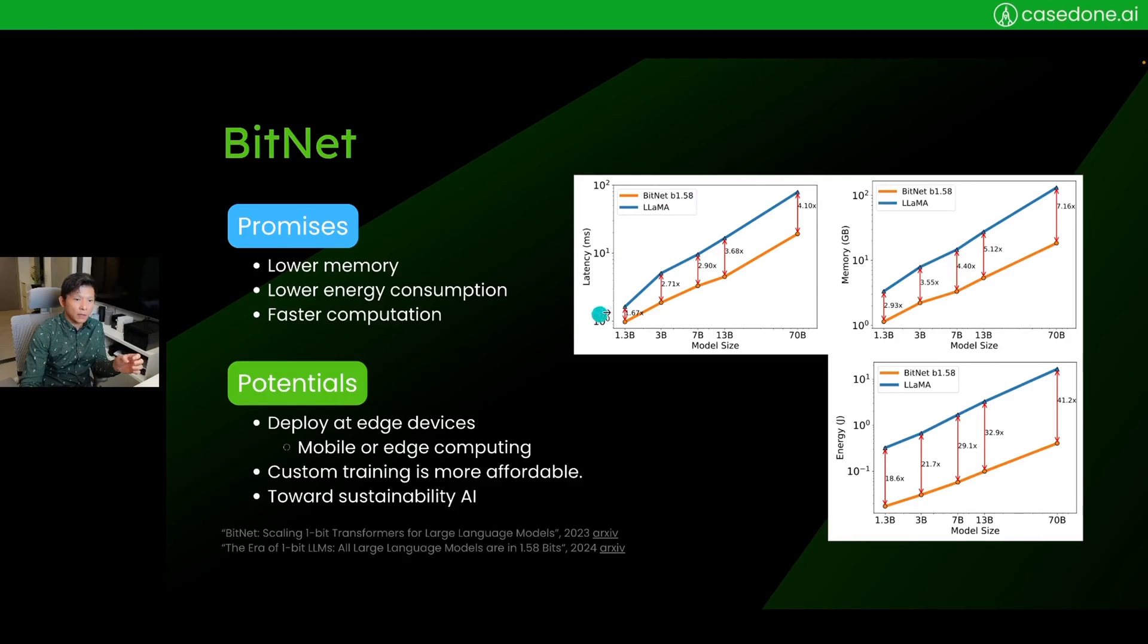This plot is from the paper about BitNet, comparing the BitNet represented in the orange line to the Llama models in full precision. In this plot, the x-axis shows model size like 7 billion parameters, 3 billion parameters, and so on. On the y-axis, this plot shows latency—how long it takes for the model to give you an answer. You can see that the latency for BitNet is significantly shorter than the Llama full model ones.